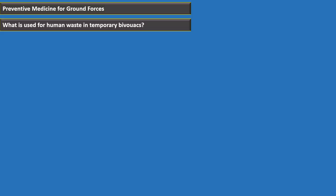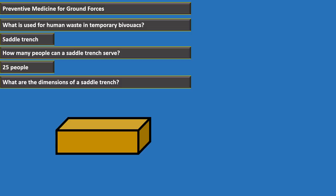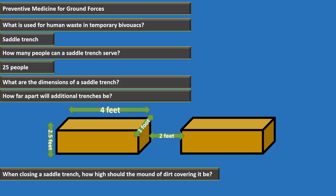Additional straddle trenches are dug two feet apart. When closing a straddle trench, the covering mound of dirt must be at least one foot high. When soil conditions are hard, rocky, or frozen, or the water table is high, use a burn barrel latrine. Prime the barrel with at least three inches of diesel fuel before use.